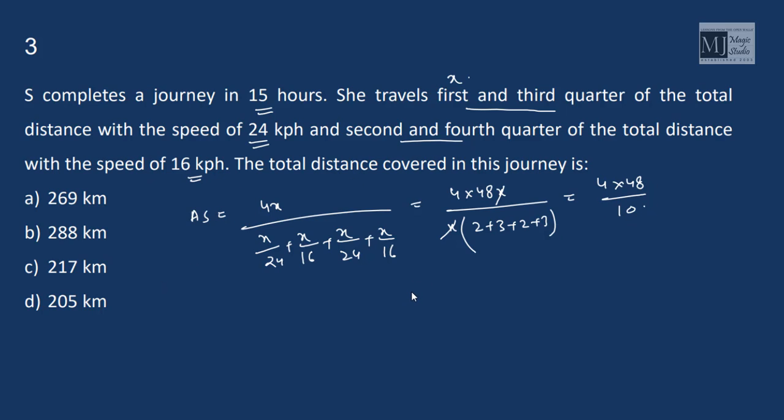So average speed is 4 into 48 by 10. The distance covered is given by speed into time, which is 48 into 6, that's 288 kilometers.